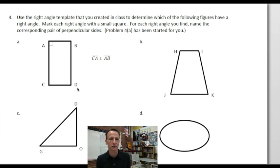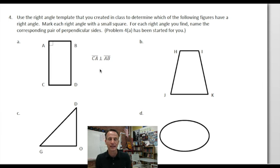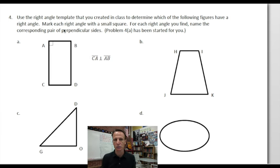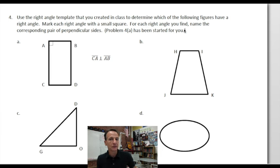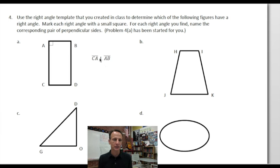I'm actually just going to use my brain because it's pretty easy to tell looking at these figures what looks like a right angle. None of these figures have 89-degree angles — they're either right angles or they aren't. So we're only looking for right angles. Mark each right angle with a small square. For each right angle you find, name the corresponding pair of perpendicular sides.